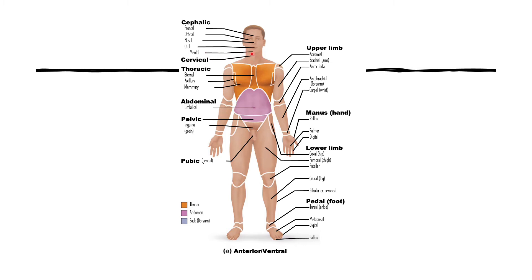Below the cephalic region is the cervical region, which is the neck. Think of a cervical collar — knowing this term tells you exactly where to place it. Inferior to the cervical region is the thoracic region.